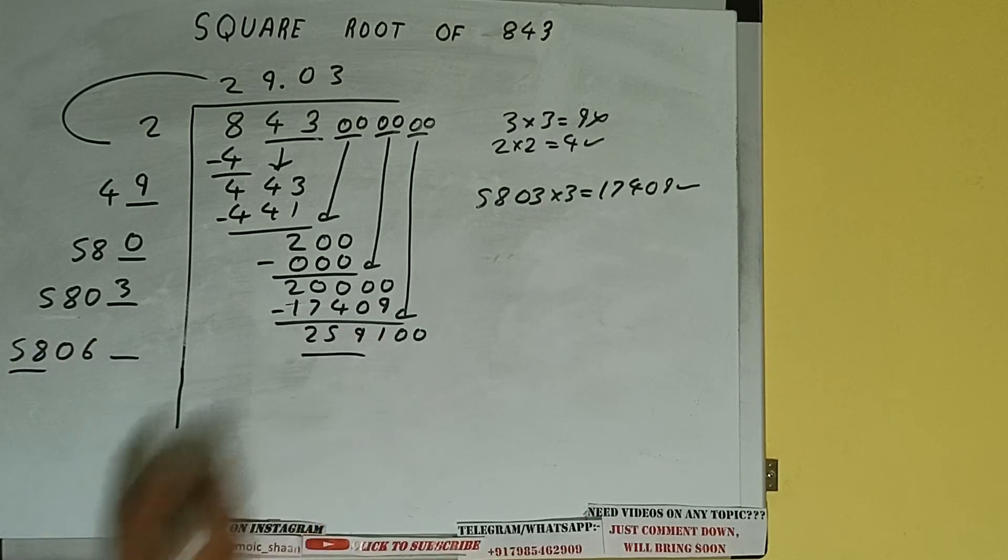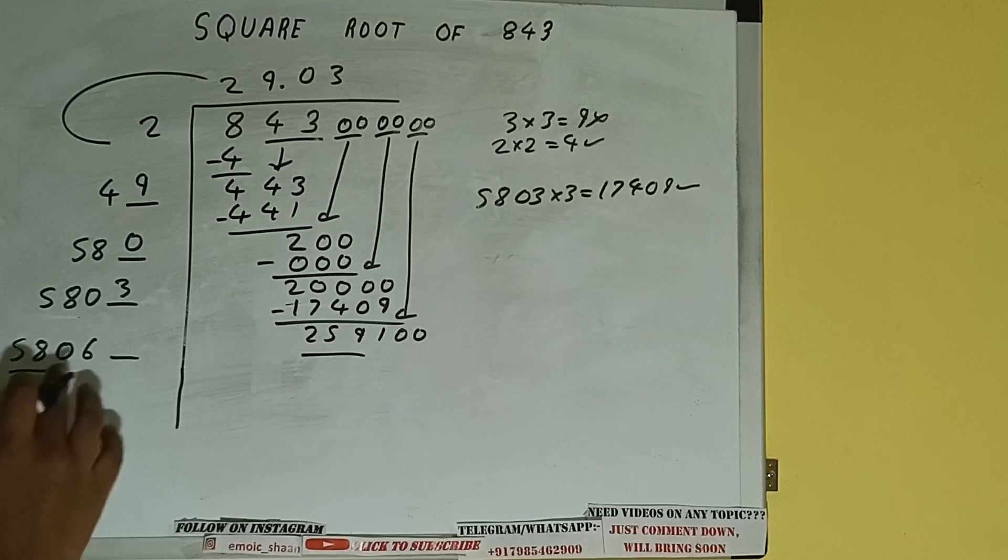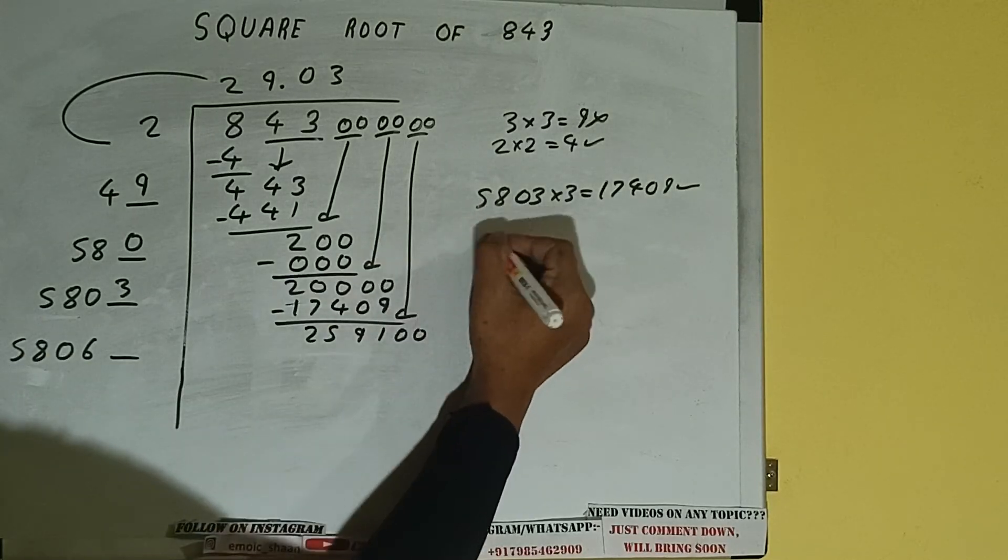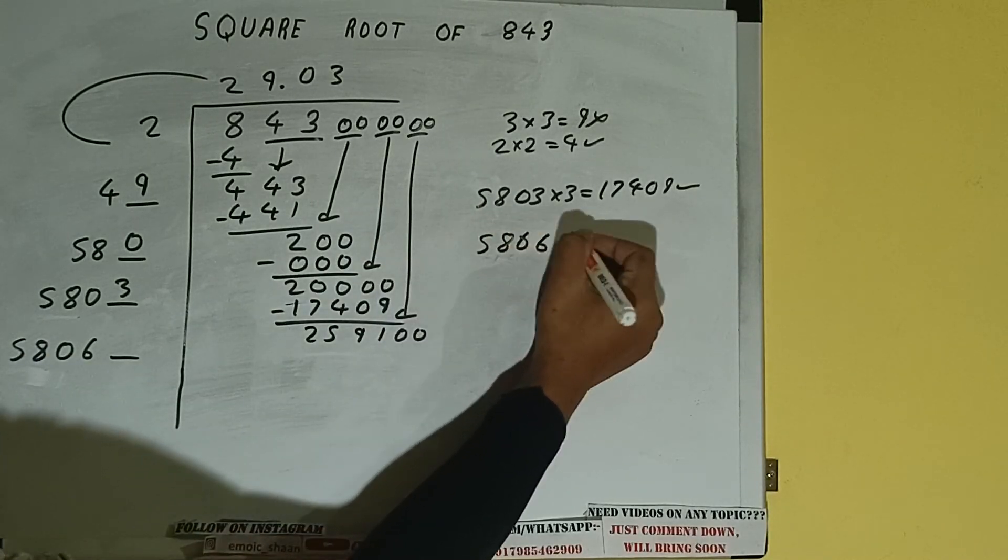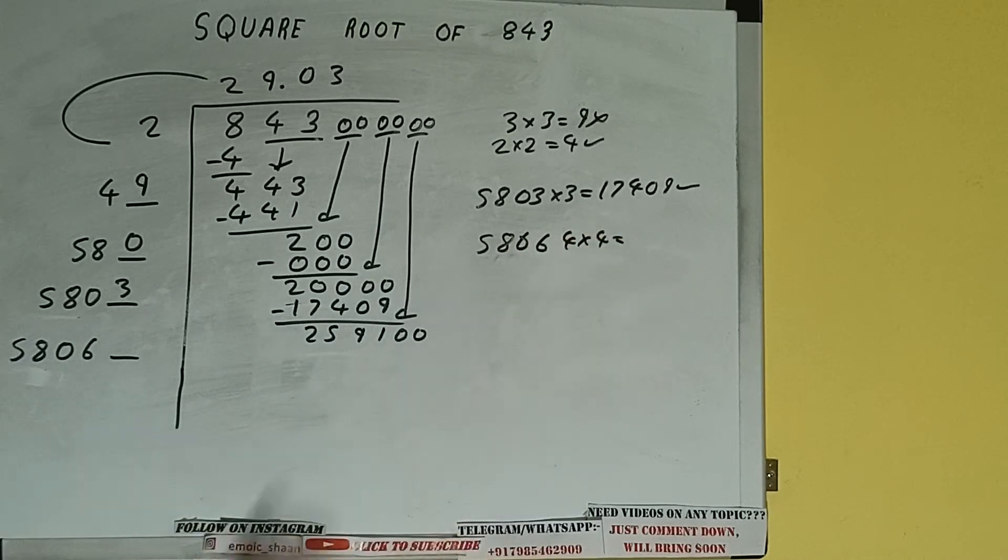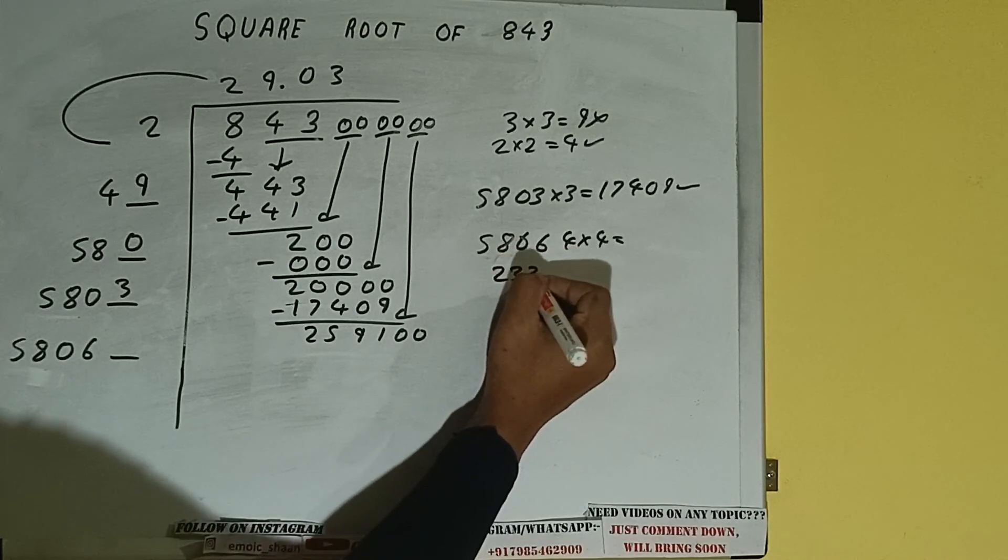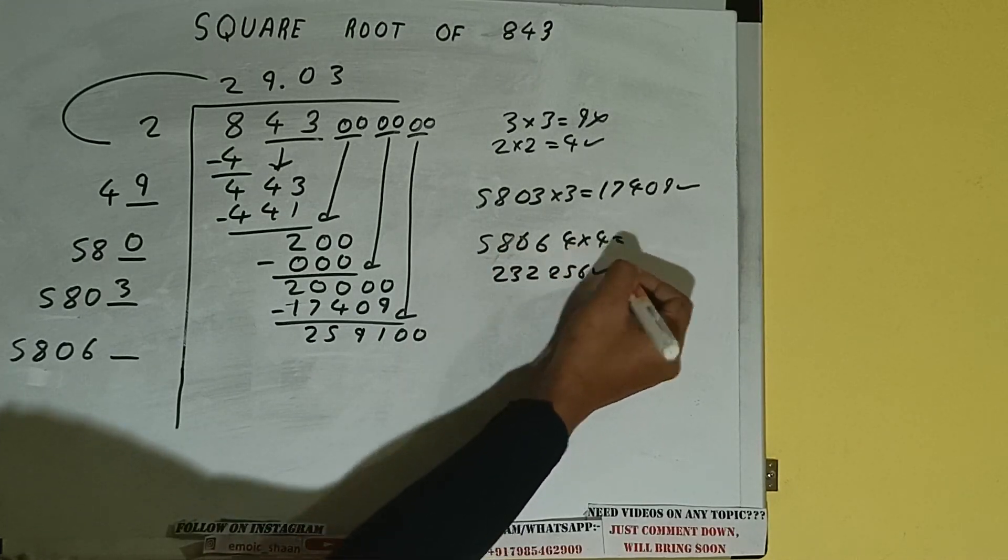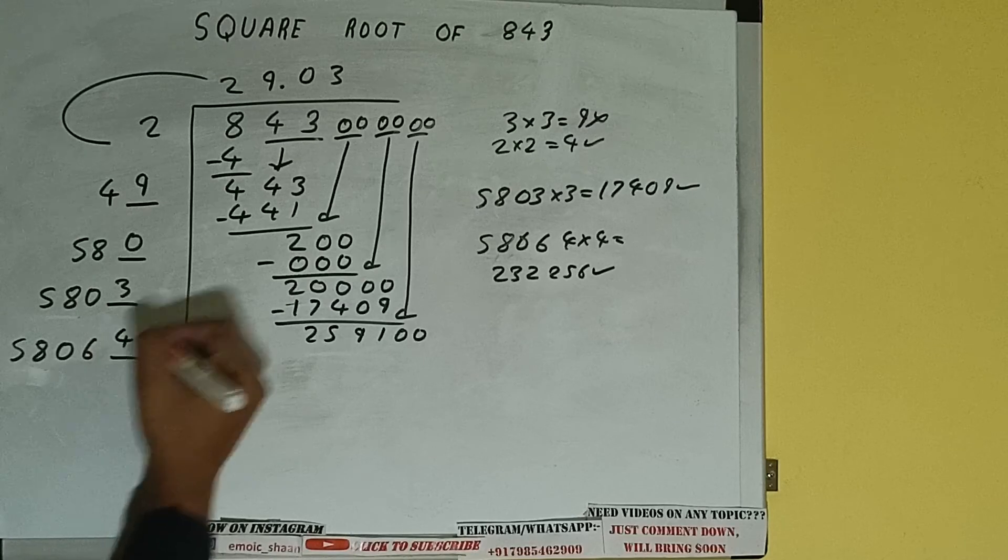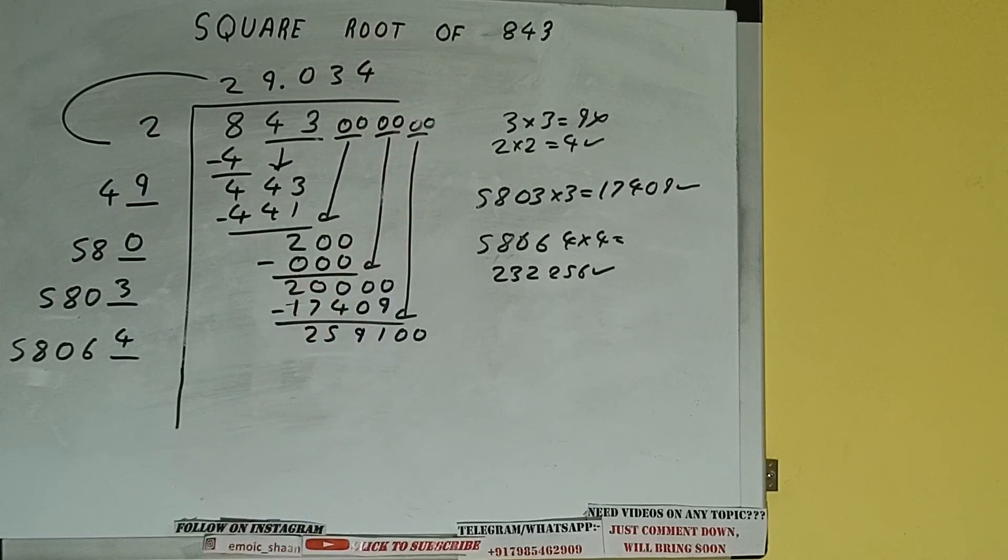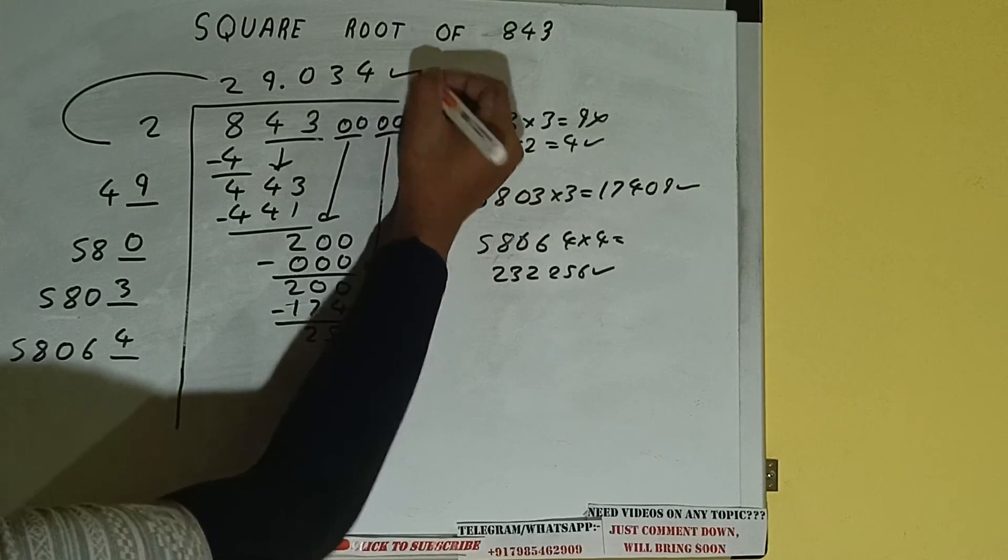Compare this 58 with this 259. So 58 4 times is 232. So we can try 4 times. 58064 into 4 we can try. And we'll be having 232,256 which is good to take. So 4 here and 4 here. But we don't need to calculate because we got the answer correct up to 3 decimal places.